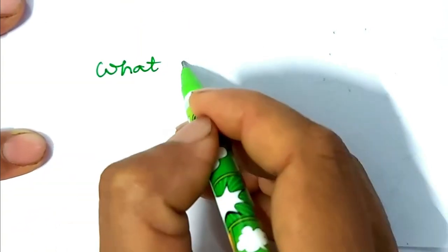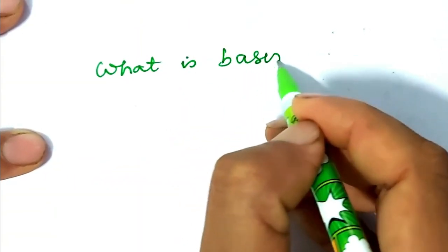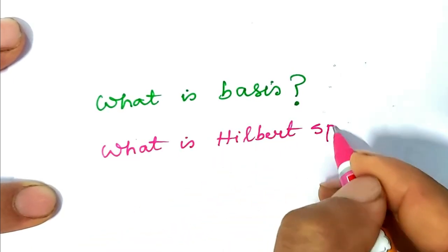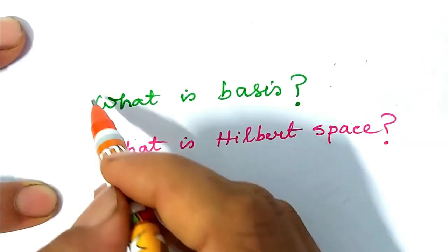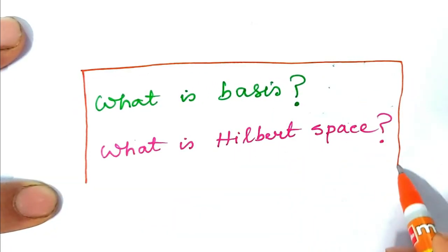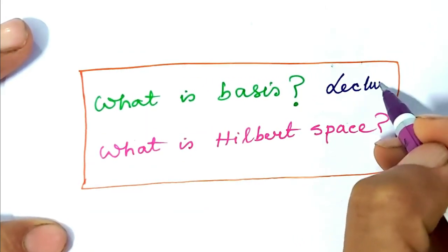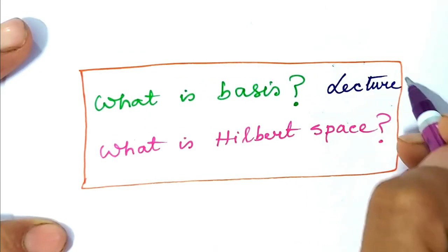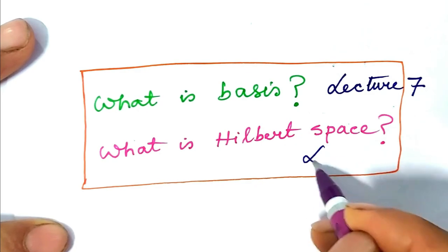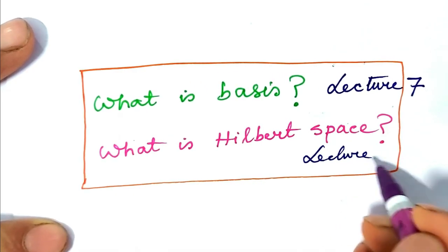We end with two questions: What is a basis? What is Hilbert space? We shall discuss the criteria needed for a set of kets to form a basis in Lecture 7, and we shall discuss Hilbert space in Lecture 8.